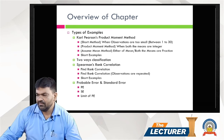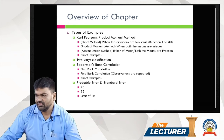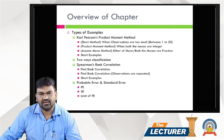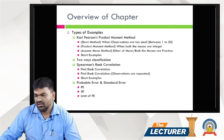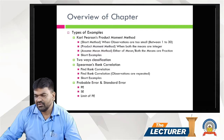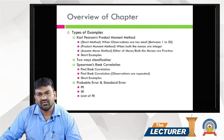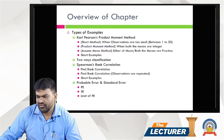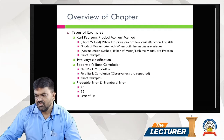The objective of the chapter covers types of examples. Type 1 is the Karl Pearson Product Moment Method. The first method is the Sort Method.